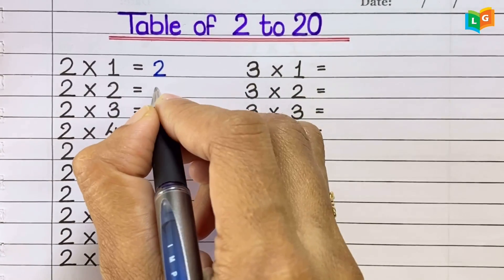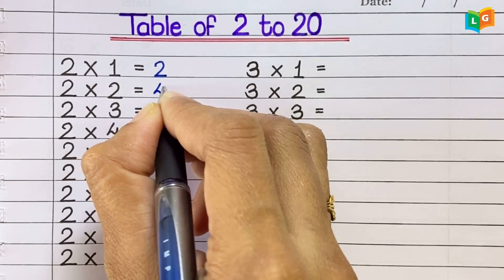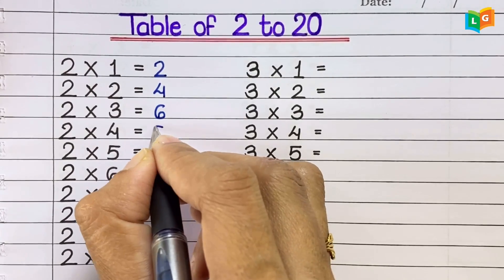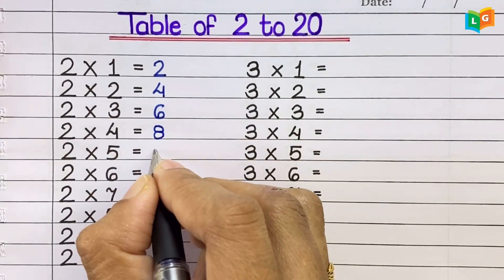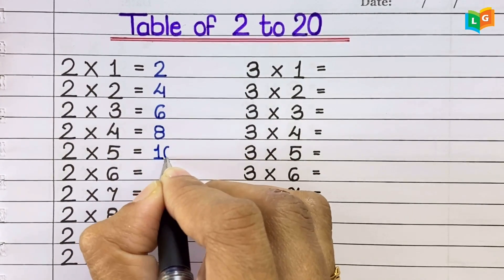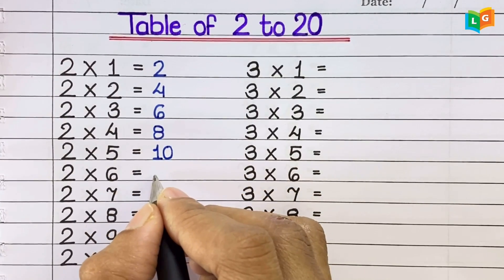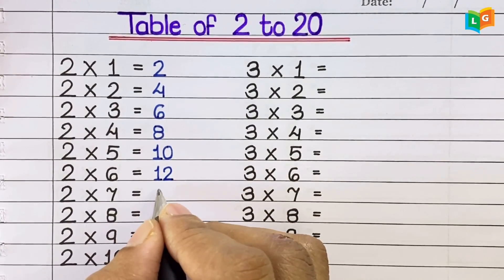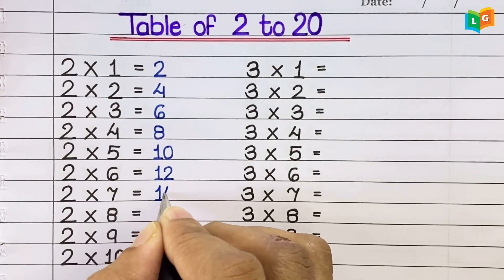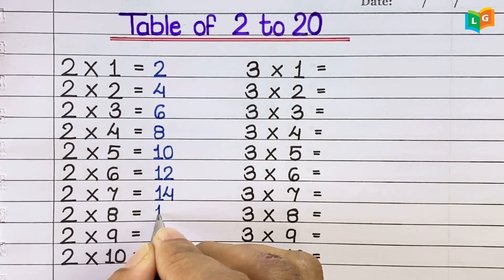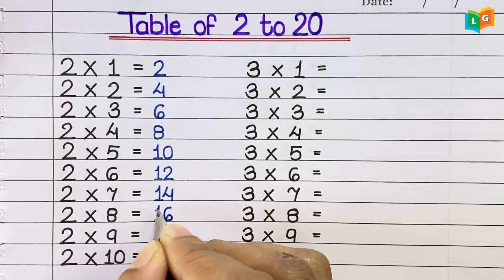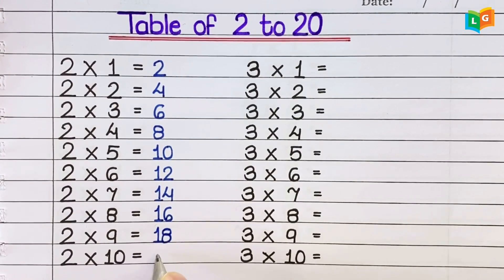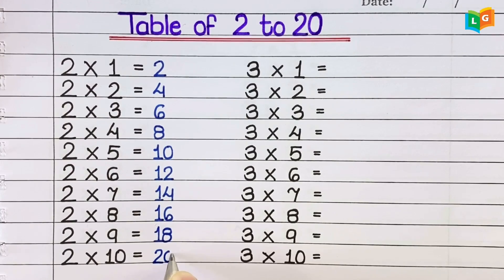2 1s are 2, 2 2s are 4, 2 3s are 6, 2 4s are 8, 2 5s are 10, 2 6s are 12, 2 7s are 14, 2 8s are 16, 2 9s are 18, 2 10s are 20.